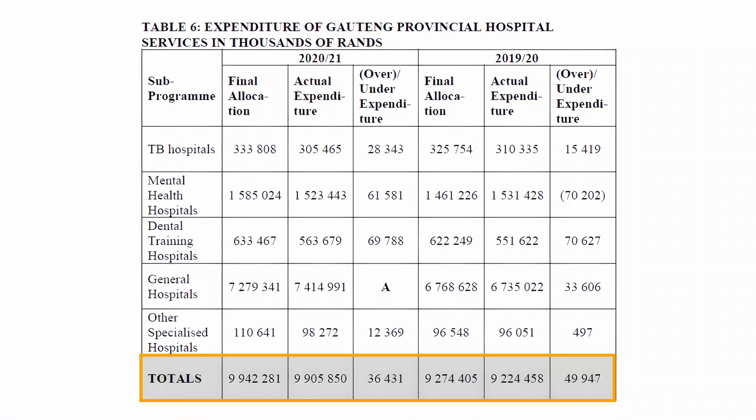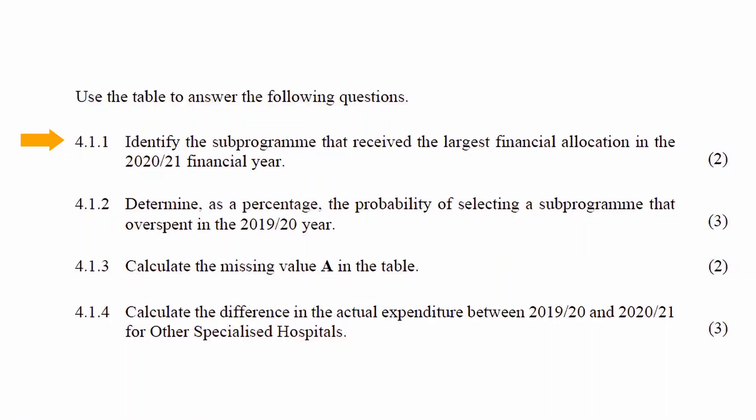The last row of the table lists the totals for each column. We have to use Table 6 to answer the following questions. In Question 4.1.1, you have to identify the sub-program that received the largest financial allocation in the 2020-2021 financial year.